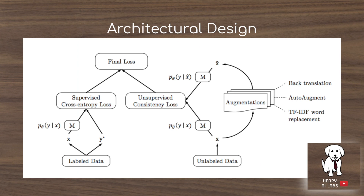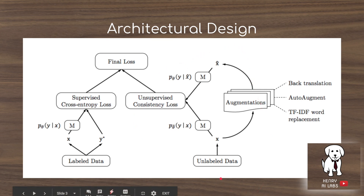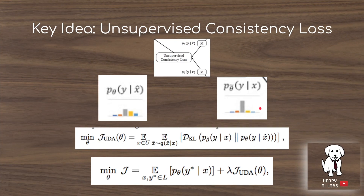This is the architectural design of their paper, and this portion over here is the novel component. What they do is they have their unlabeled data and pass it through the same classifier that is classifying the labeled data. The idea is that they want the predictions of the unlabeled data to align with the prediction of the same unlabeled data after going through data augmentations. This is the key idea: the unsupervised consistency loss — a label distribution prediction given an augmented sample compared to the original unlabeled data point.